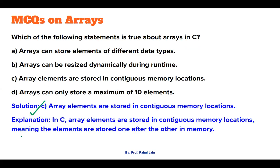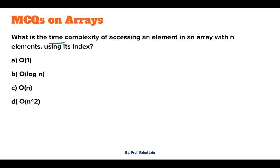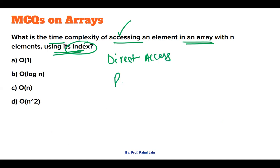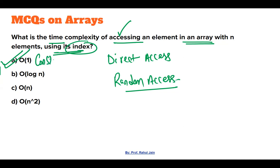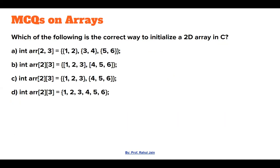The next question asks: what is the time complexity of accessing an element in an array of N elements using its index? Using an index, we can access an element directly — this is called direct access or random access. Random access is possible in arrays, so the time complexity is O(1), because we can reach and access any particular element in constant time.